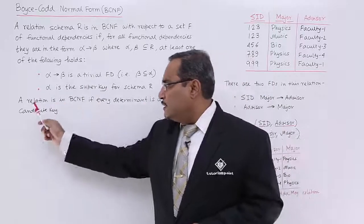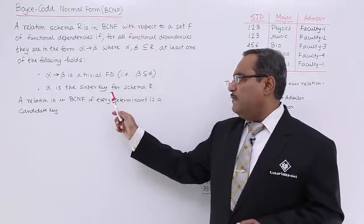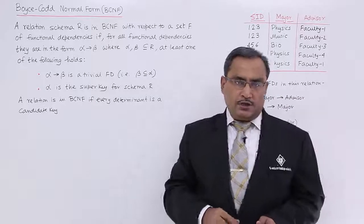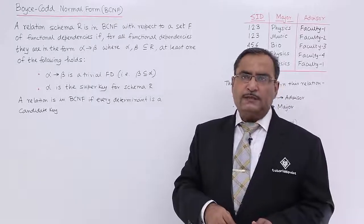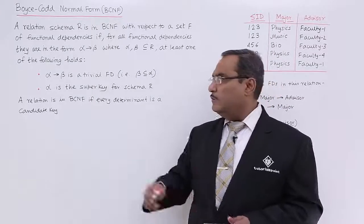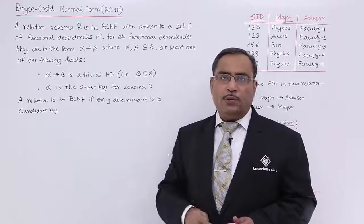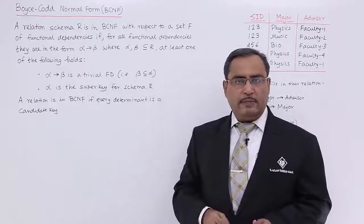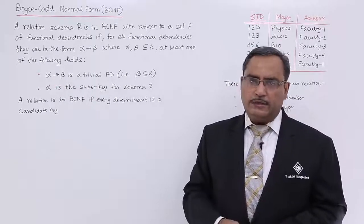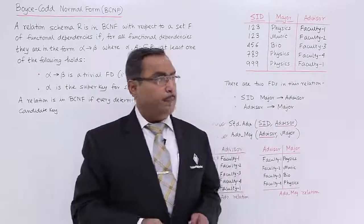A relation is in BCNF if every determinant is a candidate key. The determinant means whatever appears on the left-hand side of the functional dependency. For better understanding, let us go through one example.